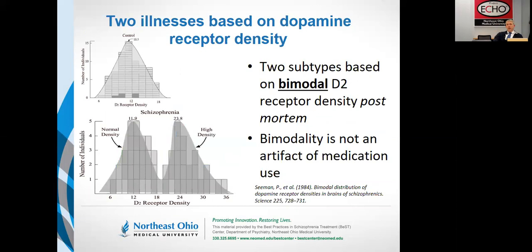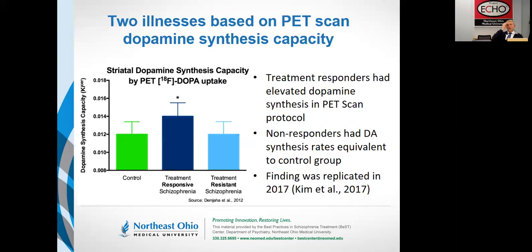Looking at post-synaptic receptors: in the top panel, you see the density of D2 receptors from the caudate nucleus. In the bottom panel, using the same techniques, you see clearly two populations — high density and low density. So two populations of schizophrenia based upon dopamine receptors. In modern times, we can use positron-emitting tags on dopamine precursors like DOPA, and by doing that you can measure in vivo in a human being their dopamine synthetic capacity. The green bar represents the dopamine synthetic capacity of a healthy control group. The dark blue bar shows that in the treatment responders — those with dopamine psychosis — they have higher dopamine manufacturing on PET scan. And interestingly, in the treatment-resistant group, the mean dopamine synthesis is exactly equal to the control group — normal dopamine.